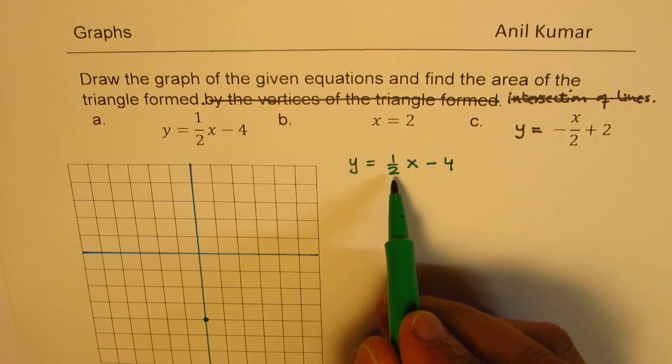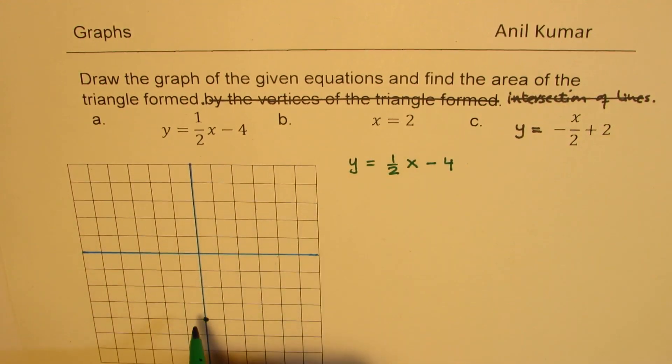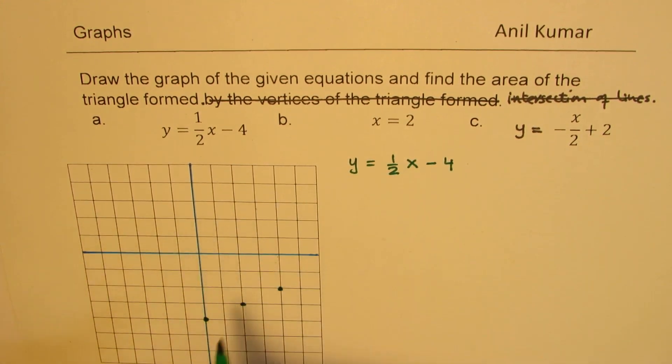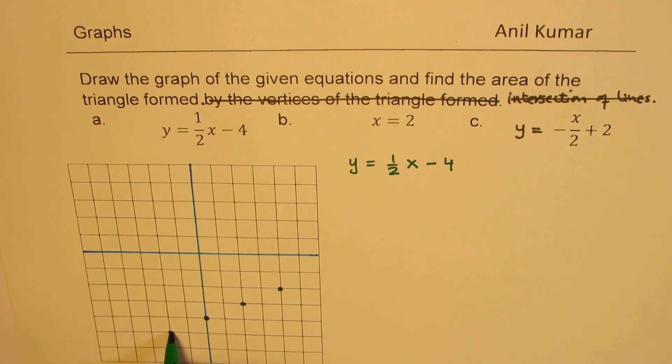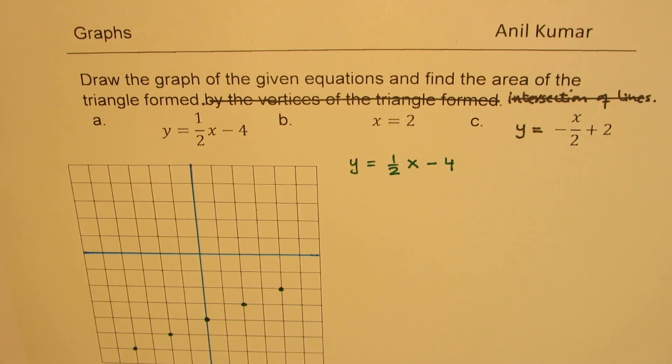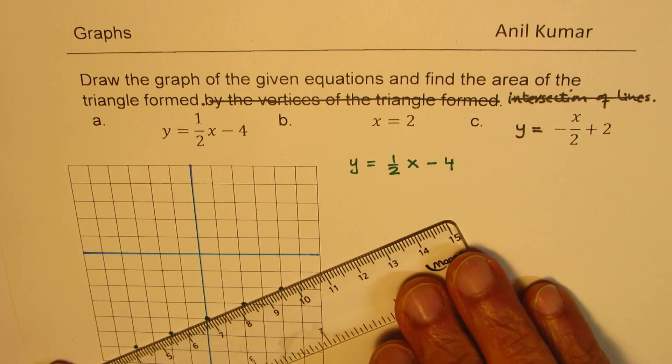And half is the slope. That means I have to go 1 up and 2 right. So when I go 1 up and 2 right, I get 1 point, 1 up and 2 right, another point. I could also move down and left. So 1 down and 2 left, 1 down and 2 left. So we have 5 points, which can give us an accurate graph. Now, connecting these, we get the first line.